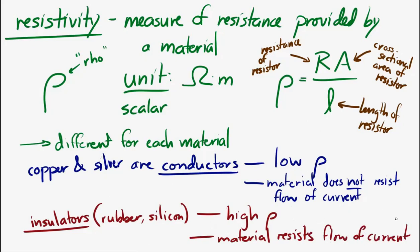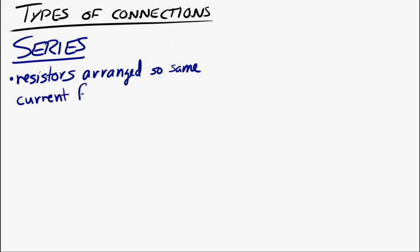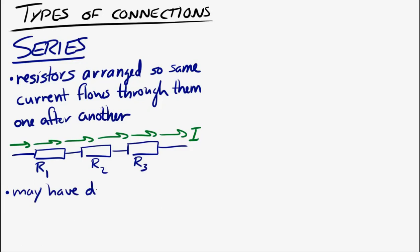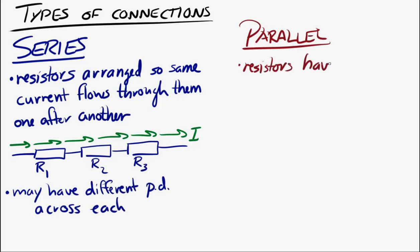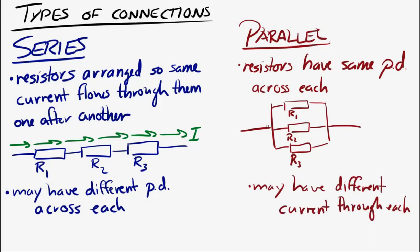Now let's look at the two different types of connections common in circuits: series connections and parallel connections. A series connection is one where resistors are arranged so that current flows through them one after another — the same current flows through each resistor in a series connection. Resistors in series all have the same current flowing through them, but they may have different potential differences. In a parallel connection, resistors have the same potential difference across them, but may have different currents flowing through them.